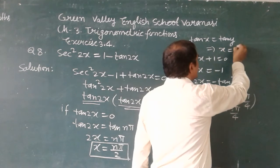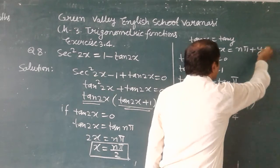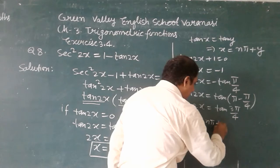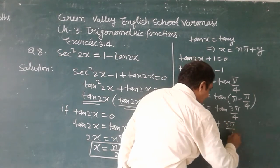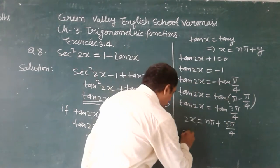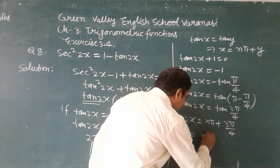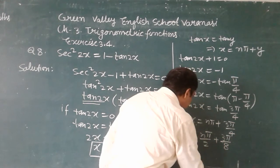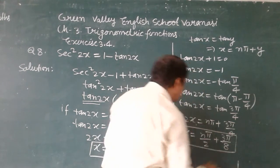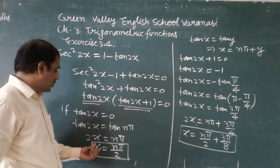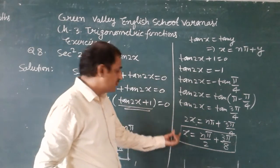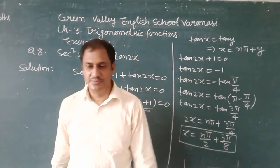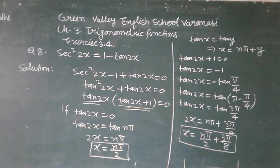The value of x is equal to nπ/2 plus 3π/8. This is the second solution. Now, we have two solutions. One solution is x equal to nπ/2, and the other solution is x equal to nπ/2 plus 3π/8. Thank you.